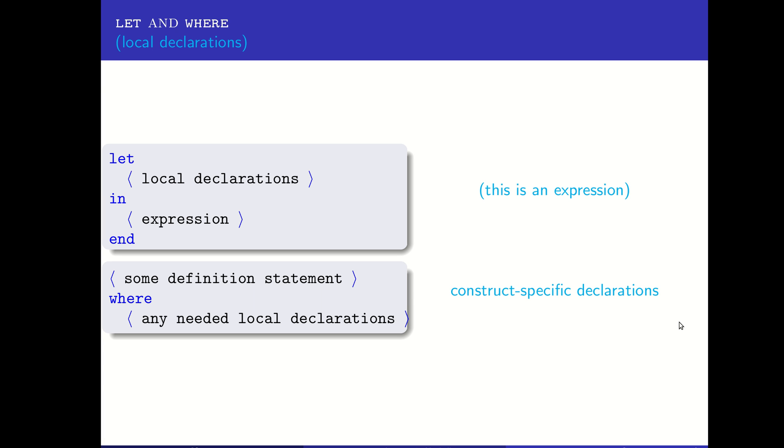We've all encountered situations where it would be very helpful to define some local things, whether they be variables or other things like local or anonymous classes even in some languages. Haskell has a couple of useful mechanisms for defining local declarations.